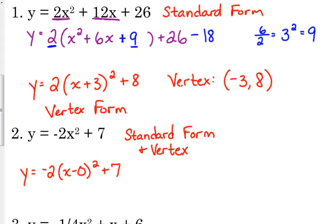So your vertex is at 0, positive 7. Your vertex is at 0, positive 7.